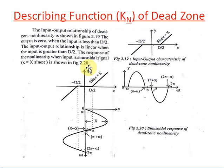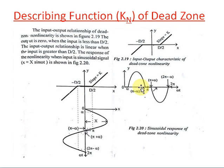We know that normally we apply a sinusoidal input to the non-linearity. That is, x is equal to capital X sin(ωt), where capital X is the maximum value of the input amplitude. The sinusoidal response is shown in this figure. The sinusoidal response is 0 up to d/2 — that is, up to 0 to alpha the output is 0. After that, the output is linear and sinusoidal up to pi minus alpha.